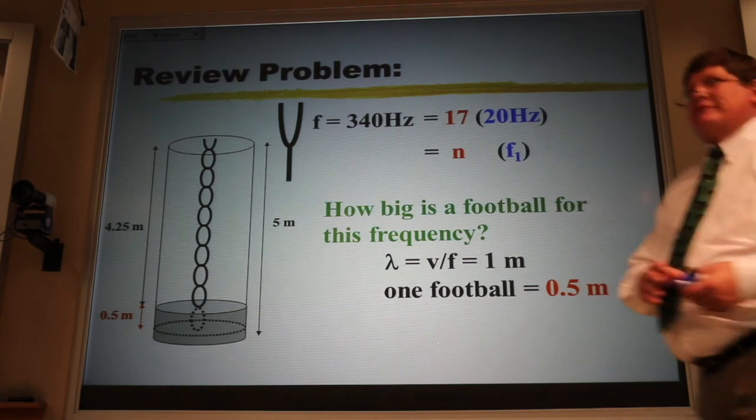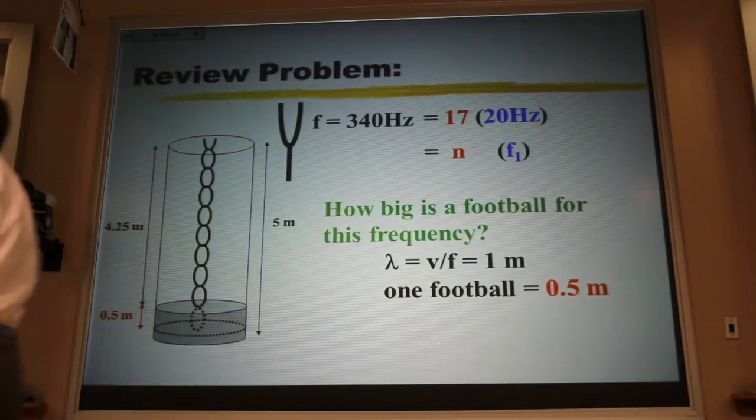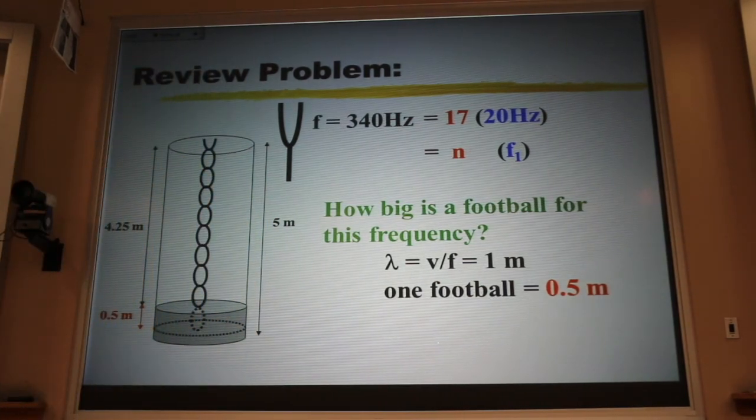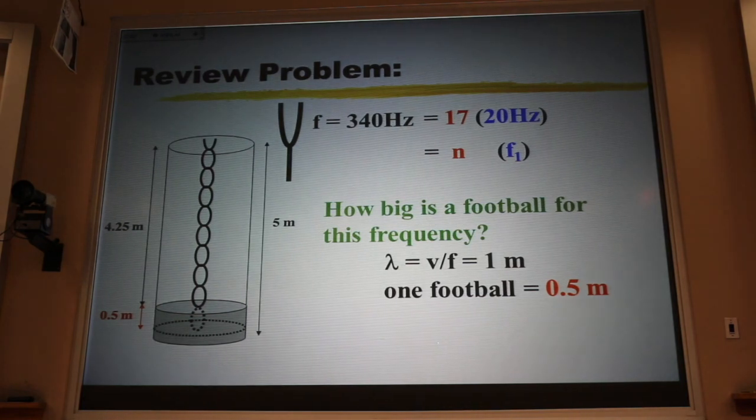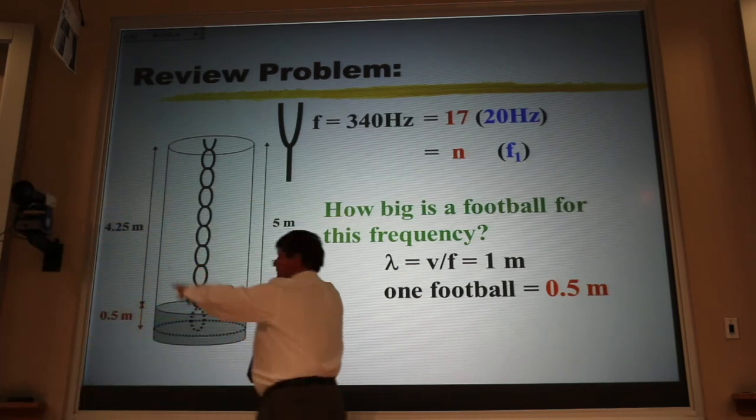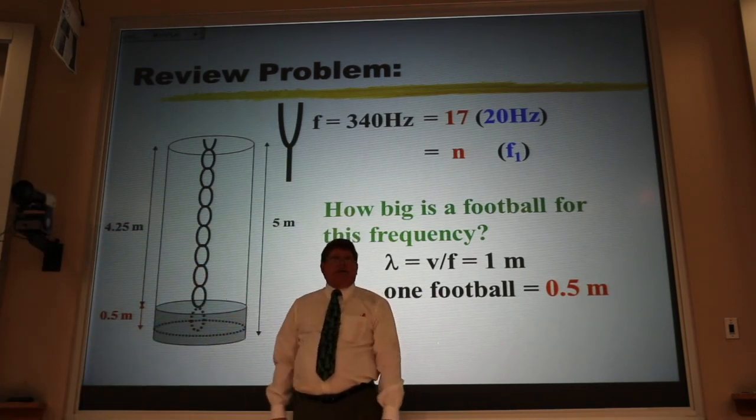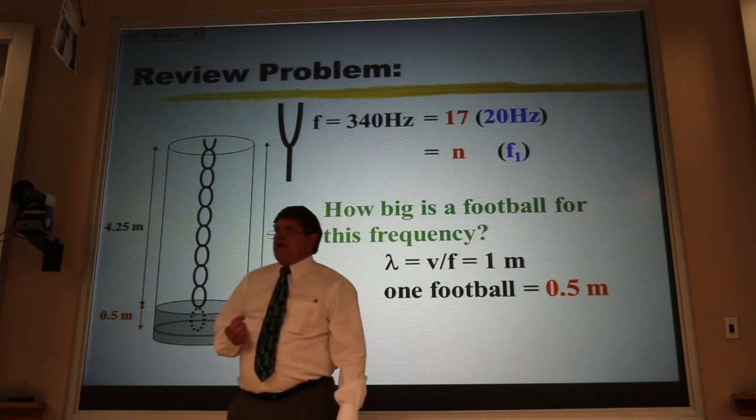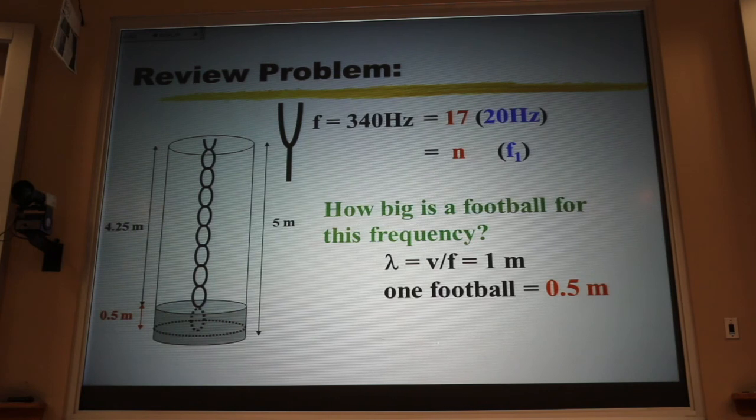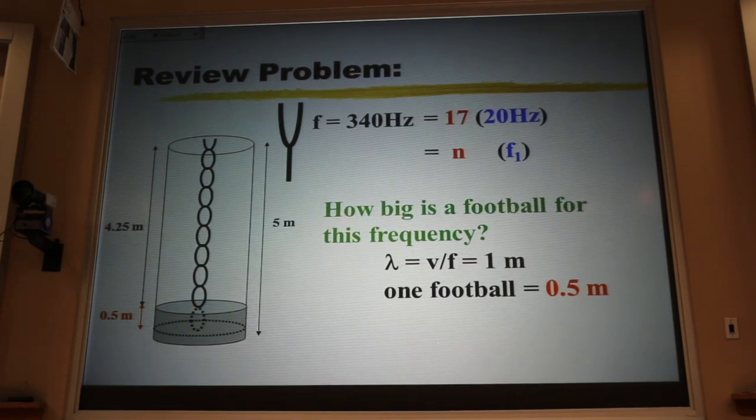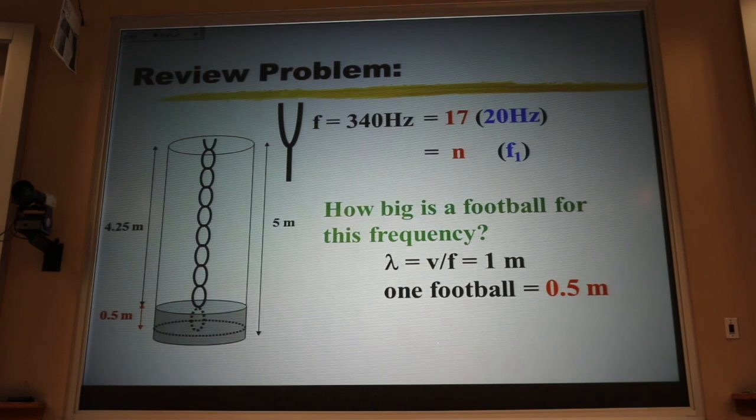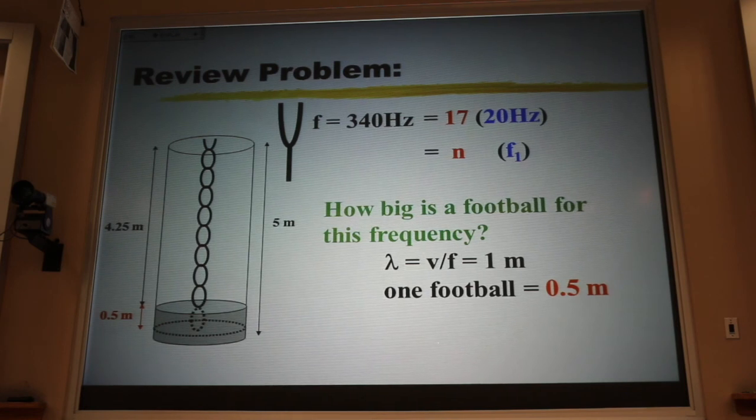But now I'm not playing the 17th harmonic anymore. Which harmonic am I playing now? The 19th. Well, wait a minute. If it's still 340 hertz, how can it be the 19th harmonic and the 17th harmonic? Well, by dropping this level of the water, I changed the fundamental. And so now the fundamental is not 20 hertz anymore. It's something lower than 20 hertz. And now 19 times the new fundamental is 340, whereas it used to be 17 times 20 gave me the 340.